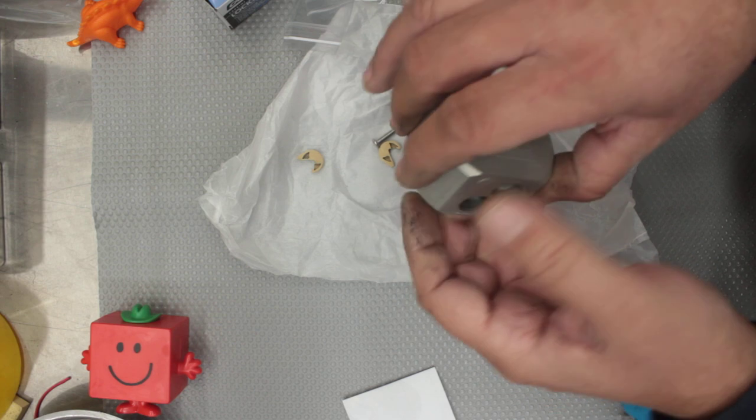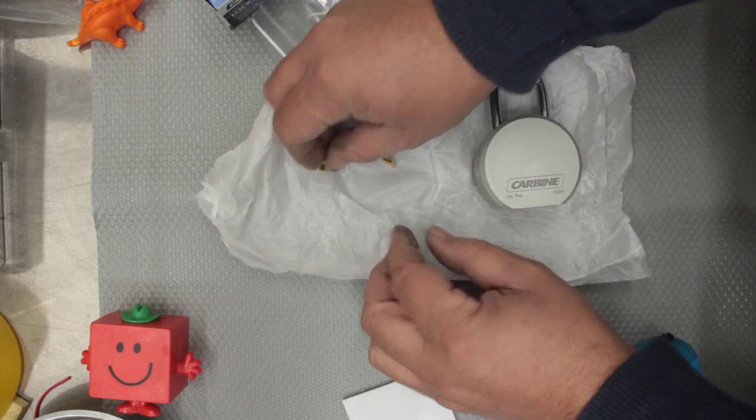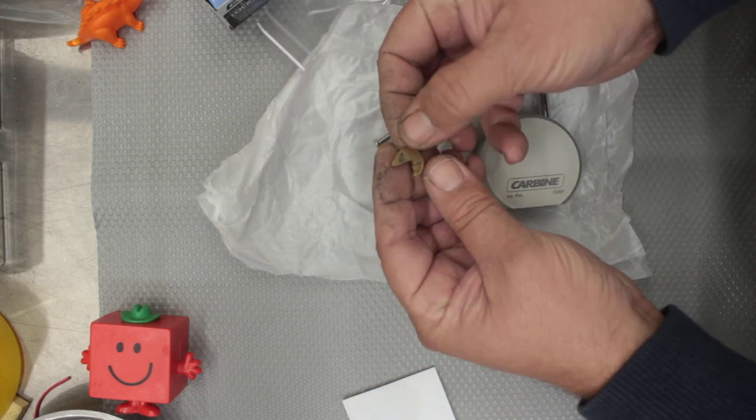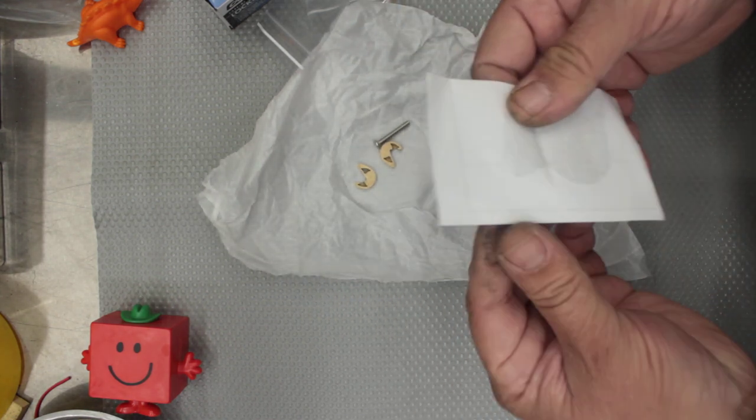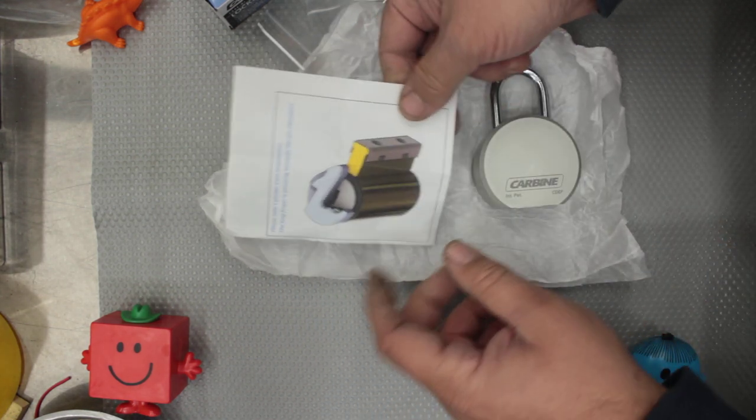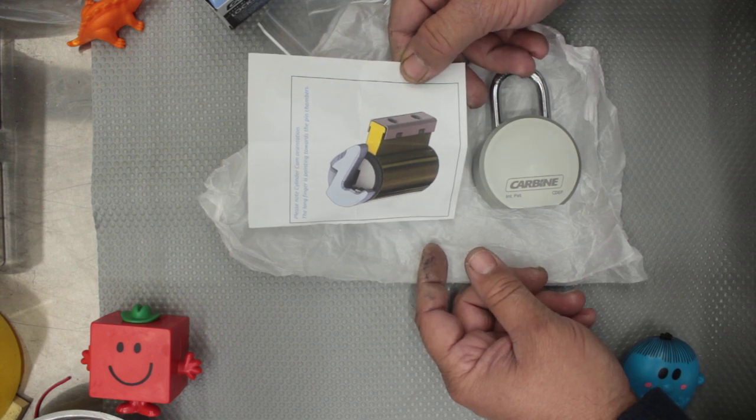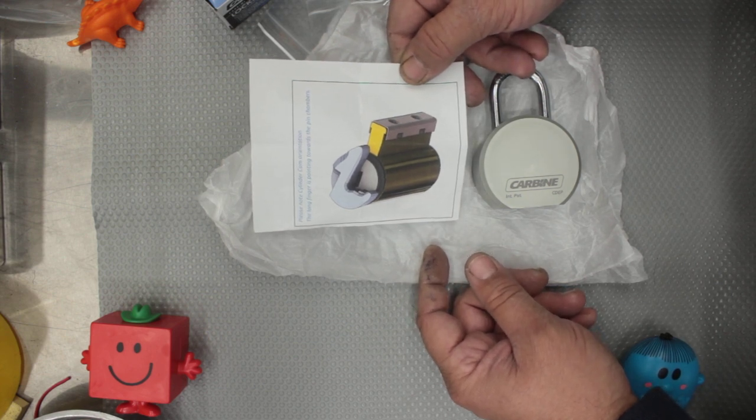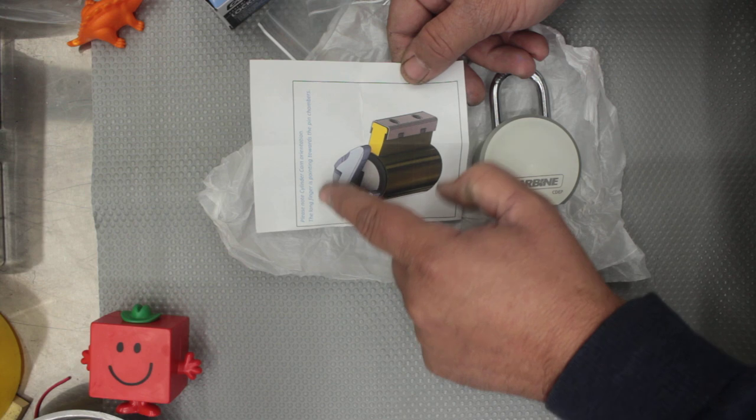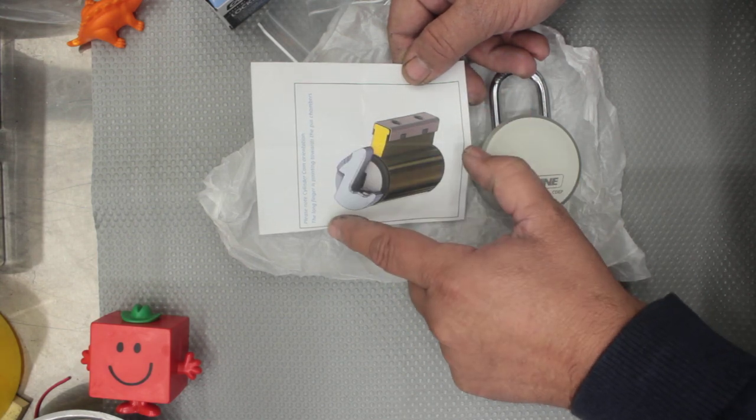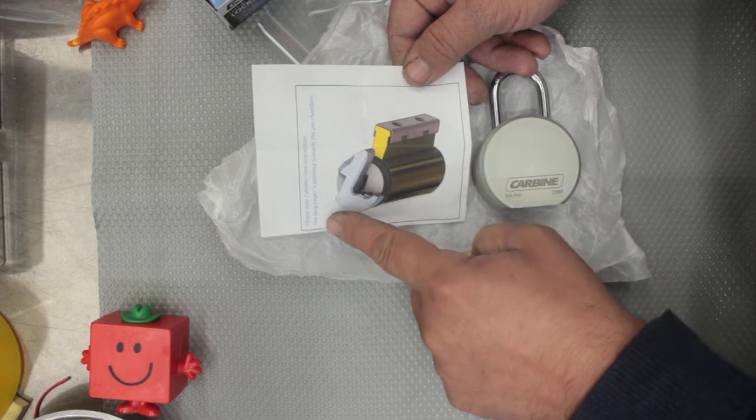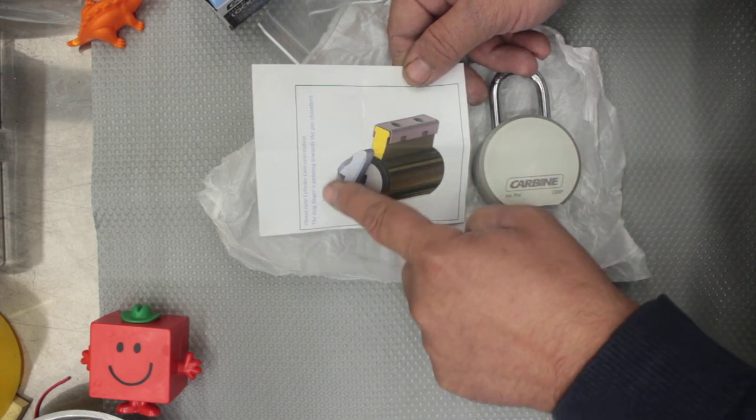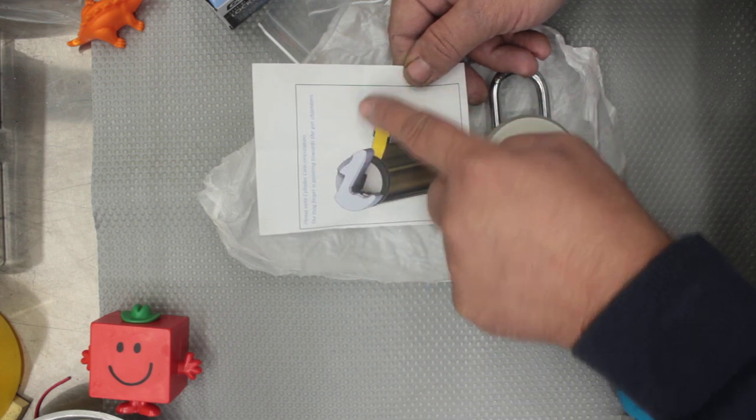It looks like there are two keyholes, two tail pieces here, and these are suited for the 530 cylinder. Some instructions—I always love instructions with big colorful pictures, makes life so much easier. Please note cylinder cam operation, also orientation. The long finger is pointed towards the pin chamber.